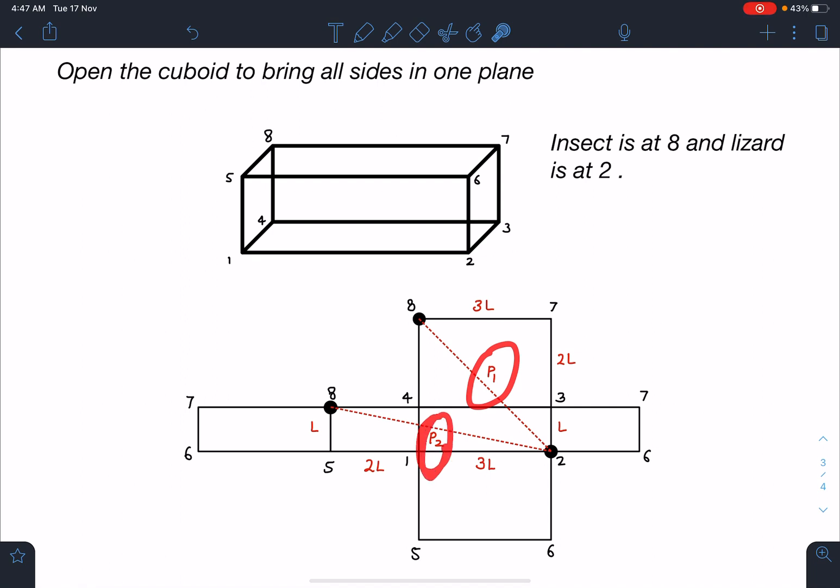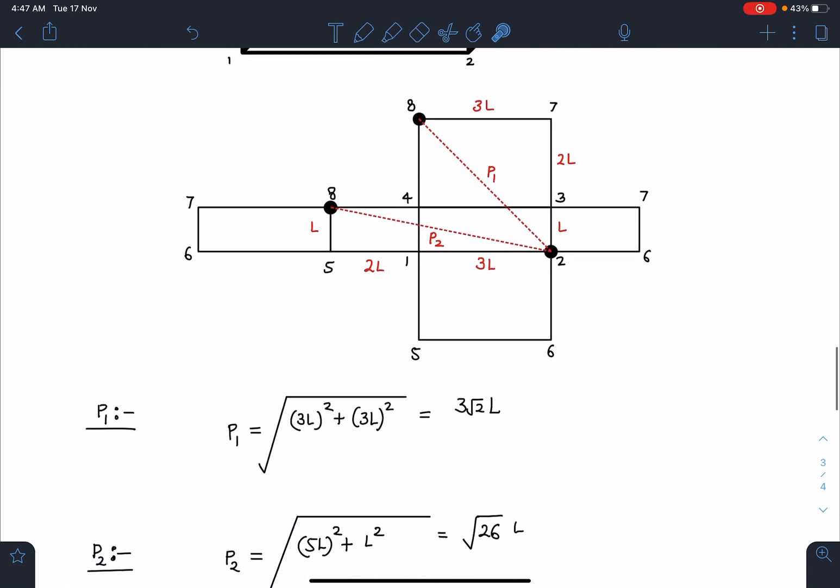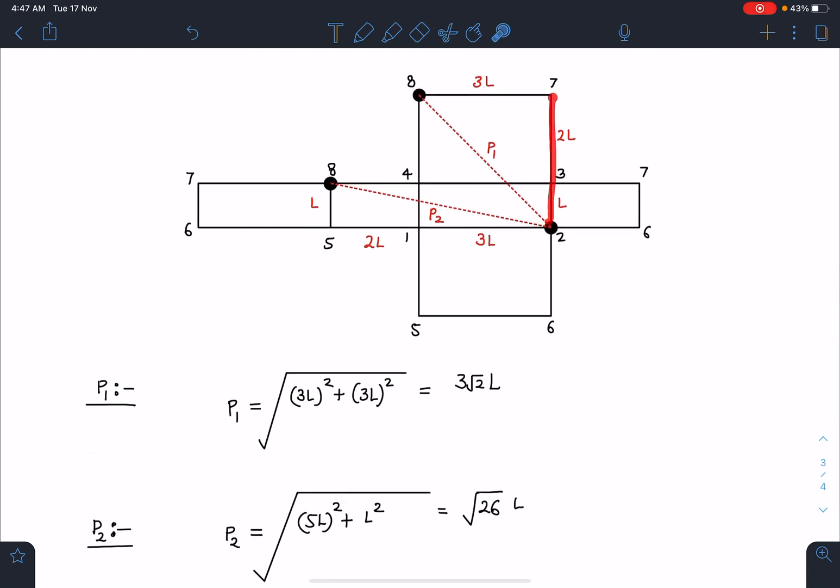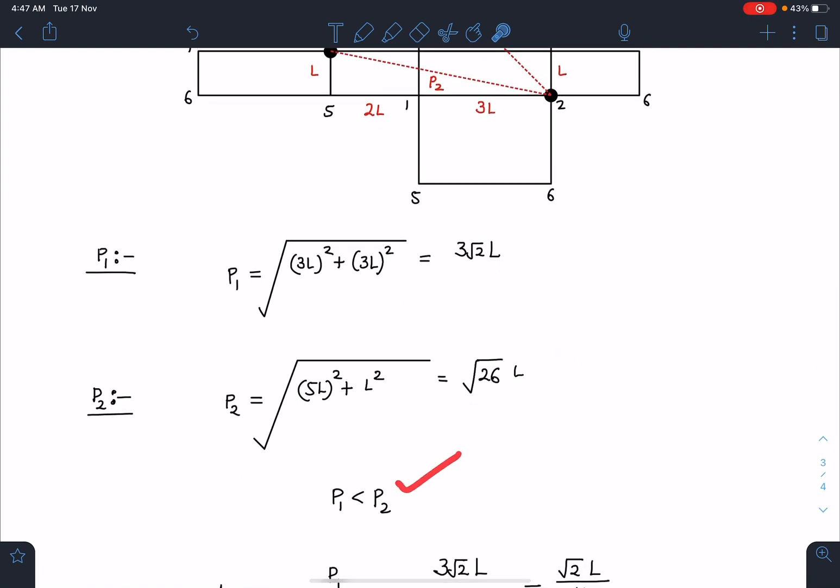I'm going to calculate these lengths and whichever is minimum, I will choose that path. When I calculate P₁, you can see L plus L, this side is 3L. So this is 3√2L. Similarly here, this is 3L and 2L, so this is 5L and this is L. If I use Pythagoras theorem, I am going to get this path length as √26L. Clearly P₁ is less than P₂.